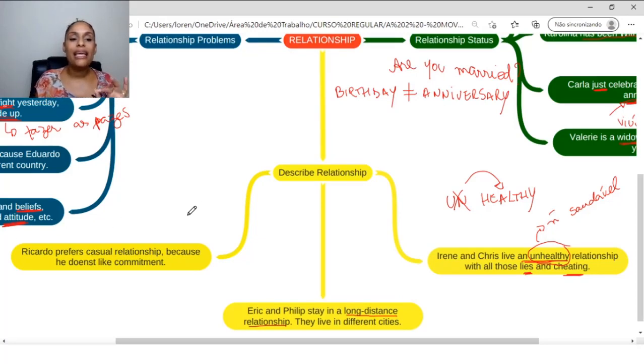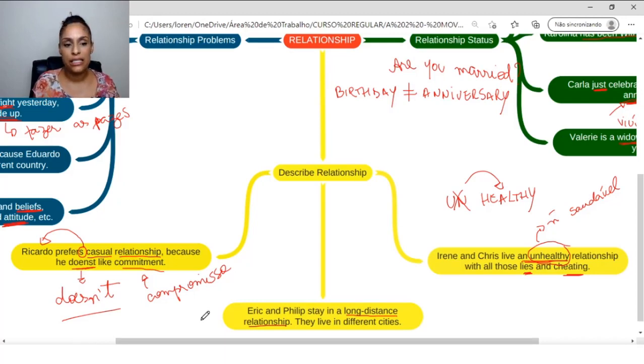Another one we have here is: Ricardo prefers... Look what we are seeing here. Take the opportunity to review grammar. Look, the verb is conjugated in the third person of the present. Ricardo is he. So, he prefers. I prefer. You prefer. He, she, it prefers. So, he prefers casual relationship. He prefers a casual relationship. That is, he prefers a relationship without commitment. So, Ricardo prefers a casual relationship because he doesn't like commitment. He doesn't like to have commitment with anyone. Commitment. And here, I switched the S. Now that I saw and forgot. The correct way to write is this one. And teacher Laura got confused when writing. And wrote. Wrote this way.